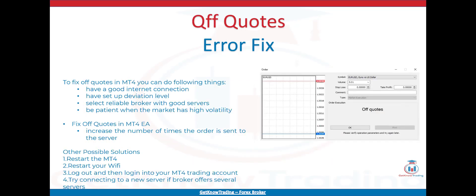Here are the steps to fix off quotes in MT4. You can do the following: have a good internet connection — this is a must; set up a deviation level; select a reliable broker with good servers; and be patient when the market has high volatility. Good internet connection will keep the platform connected to the broker server at all times. The deviation level allows you to enter trades in volatile markets where you accept small price differences — if you trade higher time frames, you can accept a few pips difference. Brokers must be reliable with stable servers so your trading is not interrupted. And if off quotes occurs in a highly volatile market, you can be patient and wait until the market calms down, which reduces stress and avoids off quotes errors.